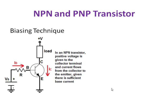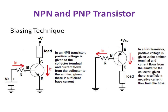The third difference is the biasing technique. In an NPN transistor, the collector is connected to positive voltage, so the current flows from collector to emitter. If it is a PNP transistor, the emitter is connected to positive voltage, so the current flows from emitter to collector.